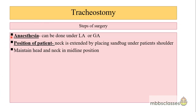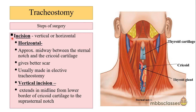Now let's see the steps of the surgery. It can be done under local or general anesthesia. GA is preferred in non-obstructive cases where the patient is already intubated and prolonged intubation is anticipated. The patient's neck is extended by placing a sandbag under the shoulder, and the head and neck must be maintained in the midline position. The skin incision may be vertical or horizontal. The horizontal incision is preferred in elective cases when there is plenty of time, while the vertical incision is used in emergencies.